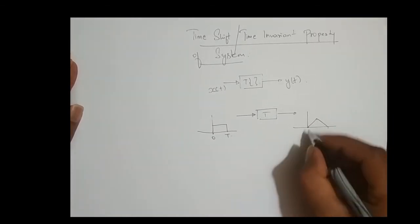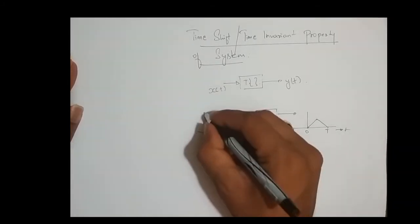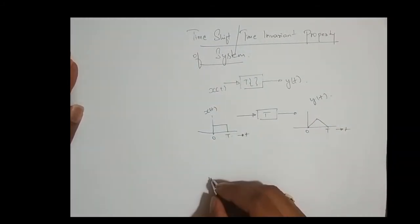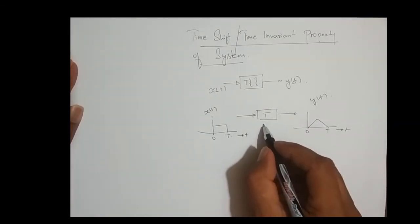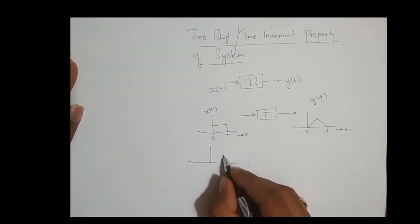From zero to t. This is x(t) and this is y(t). Now, this system is said to be time invariant if - what I do - I shift this rectangular pulse right, t_0 times.